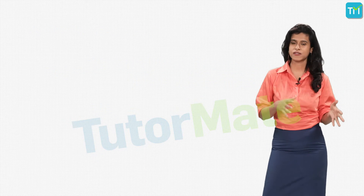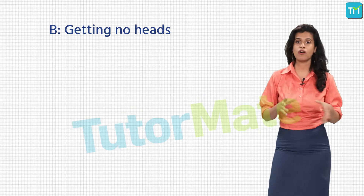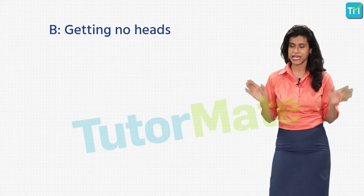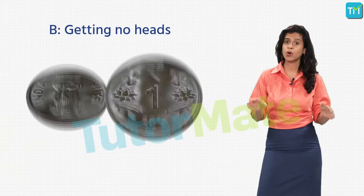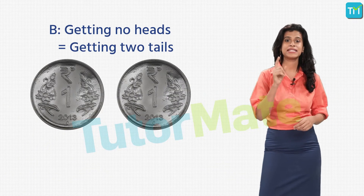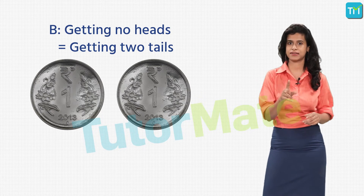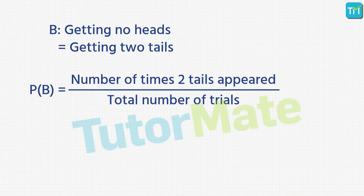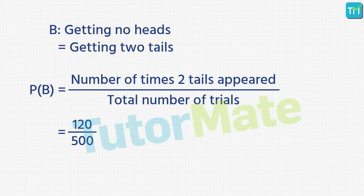Let B denote the event of getting no heads, which means getting both tails — event B is the same as getting 2 tails. Probability of B is the number of trials of getting 2 tails upon the total trials. Number of 2-tail results is 120 and total trials is 500. So it is 120 upon 500, which equals 0.24.